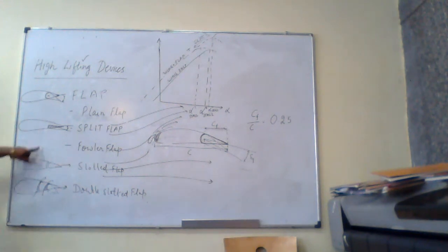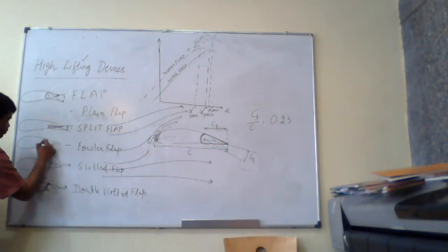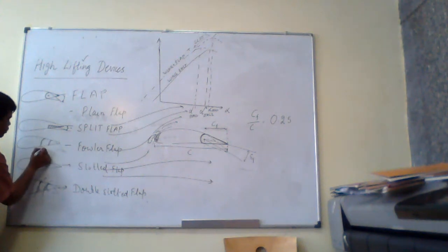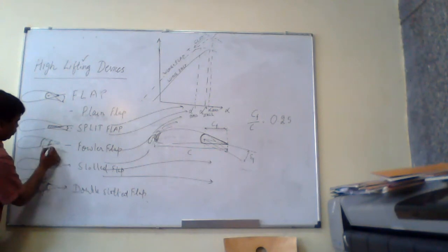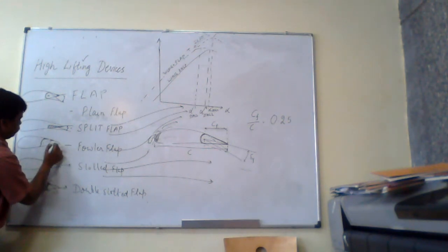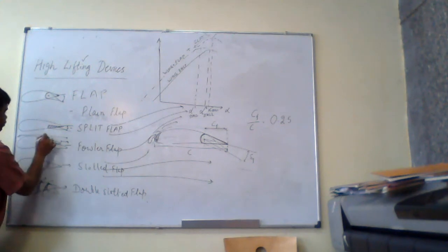What about fowler flap? This double slotted flap, it can become fowler flap when it is extended. So this extends up to this much, then this further extends. Actually they are moving back. They move back. So there is this much extra chord length is added. Where is it?